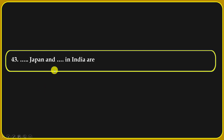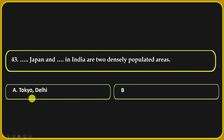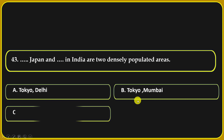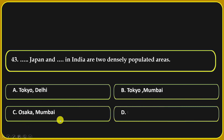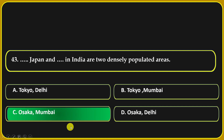Japan and India are two densely populated areas. Which are their densely populated cities? Tokyo, Delhi; Tokyo and Mumbai; Osaka and Mumbai; or Osaka and Delhi. Osaka and Mumbai are the correct answer.